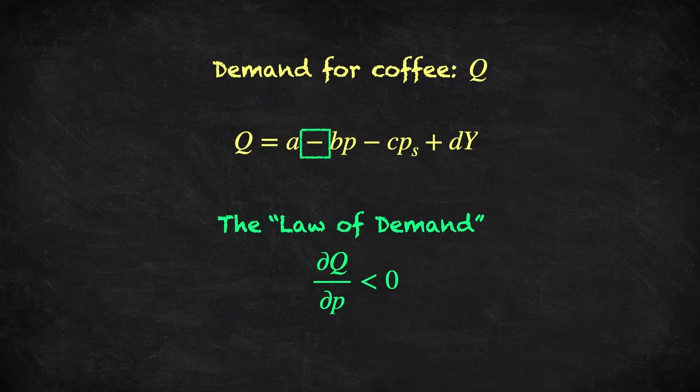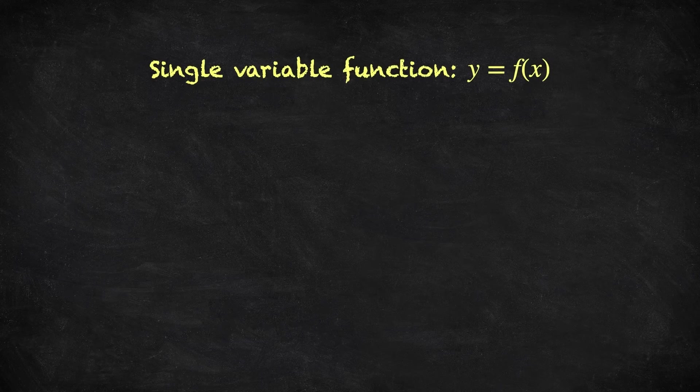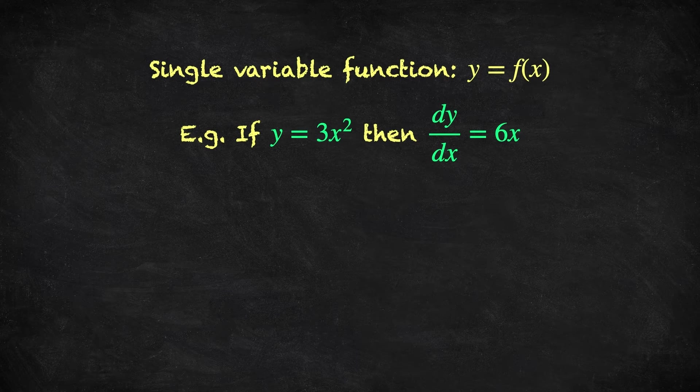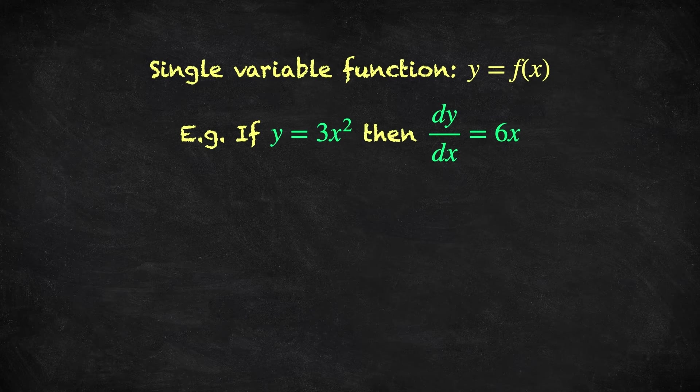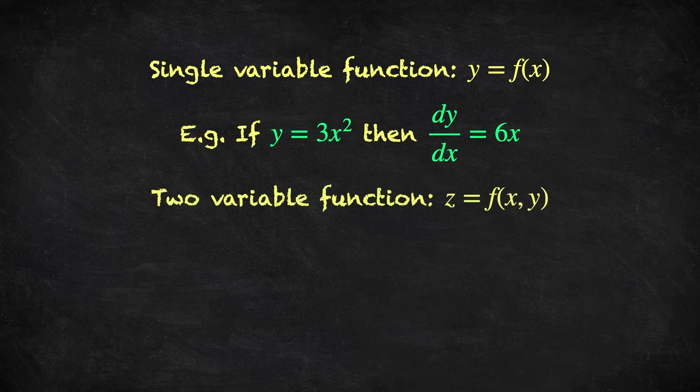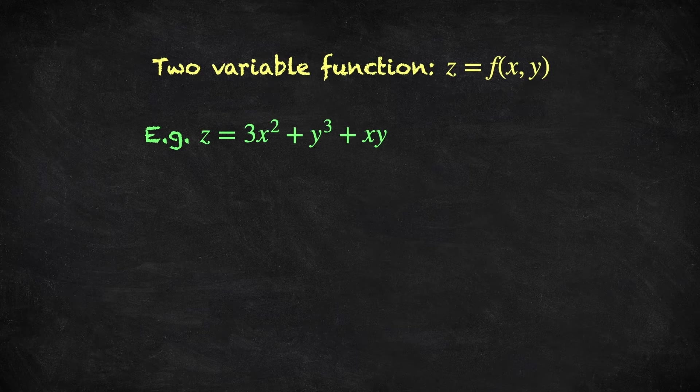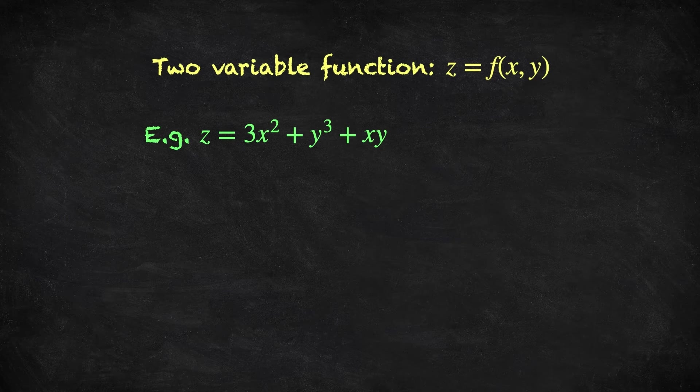Perhaps you haven't seen a partial derivative before, so let's explain that notation. I do assume that you've seen derivatives for single variable functions before. For instance, if y is a function of x, so if I write y is equal to 3x squared, then you should know that the derivative, denoted dy over dx, is equal to 6x. We assume that the demand for coffee is a function of three variables, so how do we handle that? Although there is much to learn about extending calculus to the many variable case, this is the basic idea.